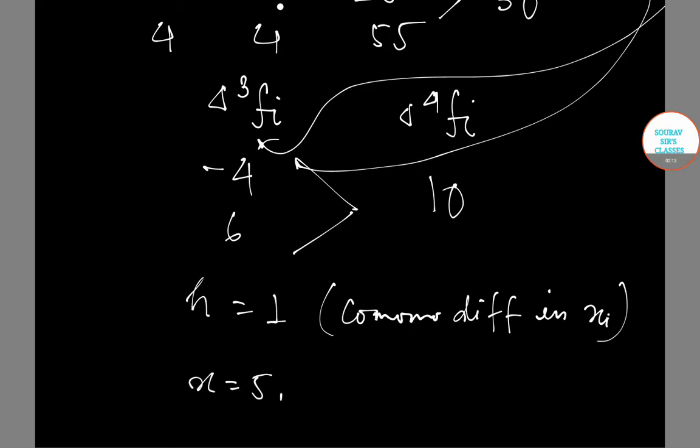X equals 5. S equals (X minus X_0)/H equals (5 minus 0)/1 equals 5.